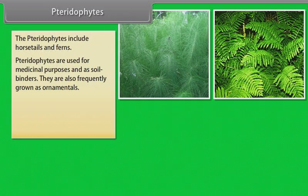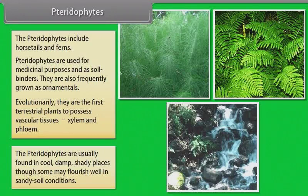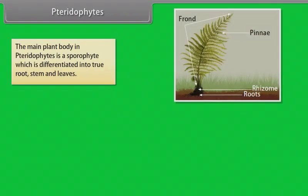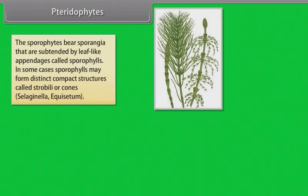Pteridophytes are used for medicinal purposes and as soil binders. They are also frequently grown as ornamentals. Pteridophytes possess well-differentiated vascular tissues. The leaves in pteridophytes are small, microphylls, as in selaginella, or large macrophylls, as in ferns. The sporophytes bear sporangia that are subtended by leaf-like appendages called sporophylls. In some cases, sporophylls may form distinct compact structures called strobili or cones, selaginella, equisetum.